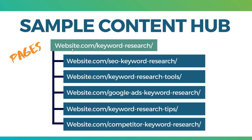I create a page on my website — website.com/keyword-research — and then I have separate pages for SEO keyword research, keyword research tools, Google Ads keyword research, keyword research tips, and competitor keyword research. Let's say over the course of the year, Google Ads keyword research changes — they release a new keyword planner or a new free tool. I want to go back to that article on a yearly basis, maybe every six months, to make sure these pages constantly stay updated. You're creating these content hubs and keeping them as updated as possible every single year, always creating the best possible content to rank higher than your competitors.